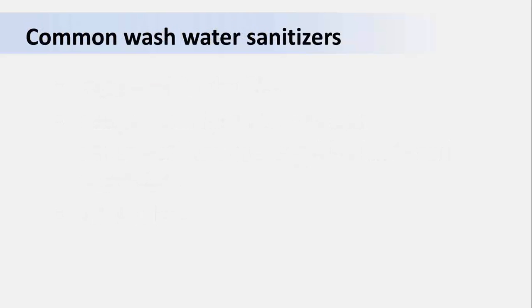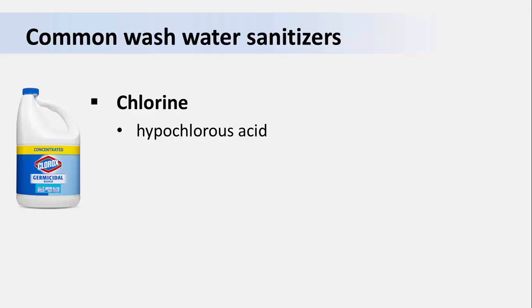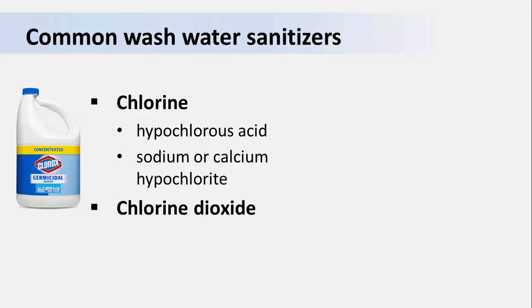What are some of the wash water sanitizers we see on the market? There are three main types. The most common are chlorine sanitizers, whose active ingredient is hypochlorous acid, also widely used in household bleach products. The liquid forms of bleach contain sodium hypochlorite, while the powder forms contain calcium hypochlorite.